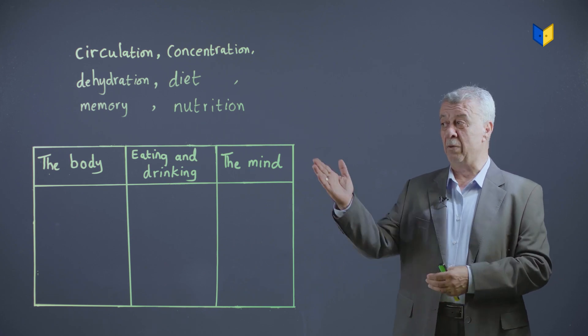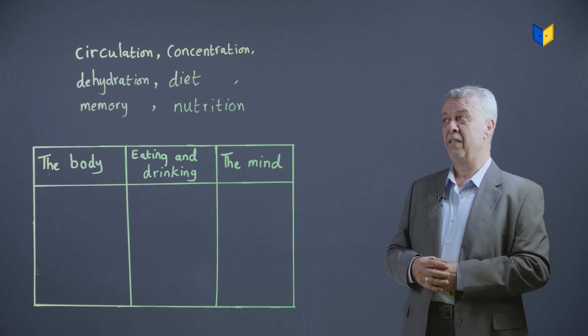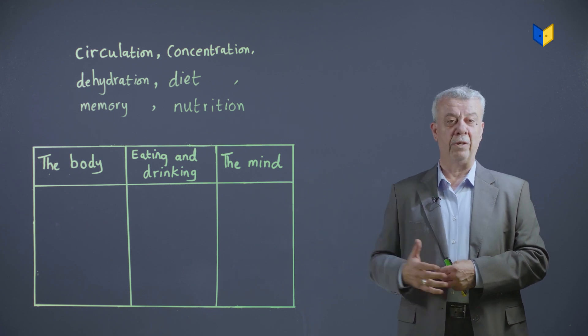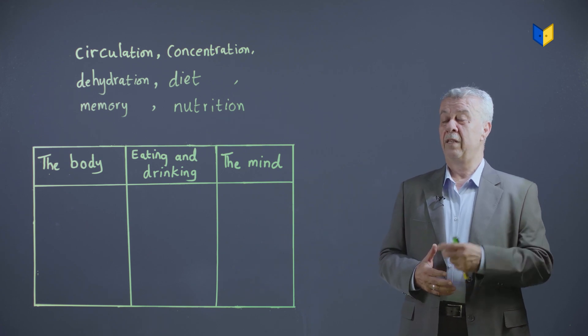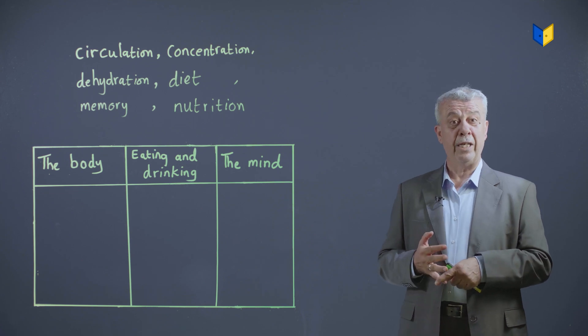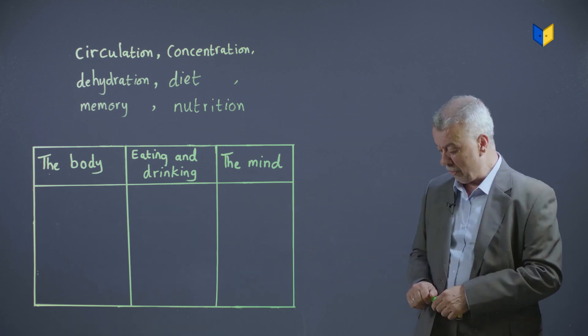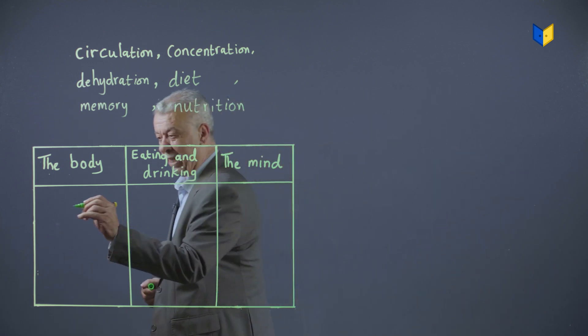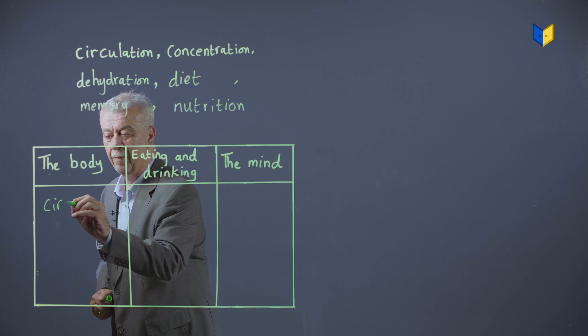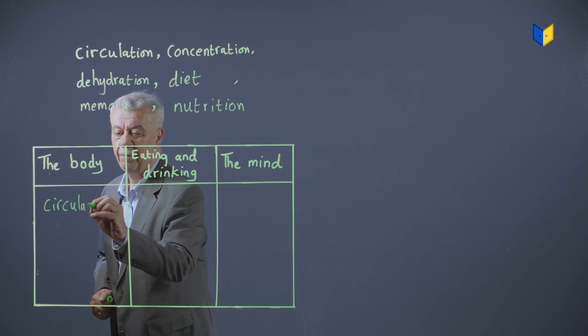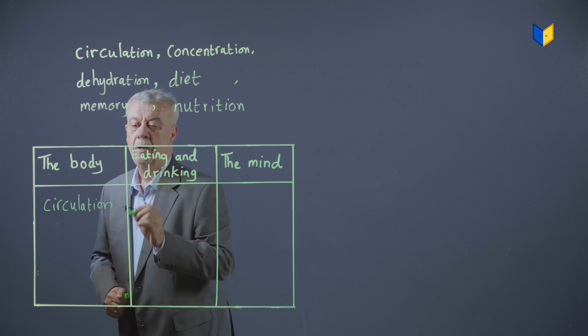Now, which words are connected with the body? طلع عليهن. شو الكلمات اللي مربوطة في الجسم هون? يلا. Circulation, yes. Because the blood circulates around our body. So, we write the word circulation here.